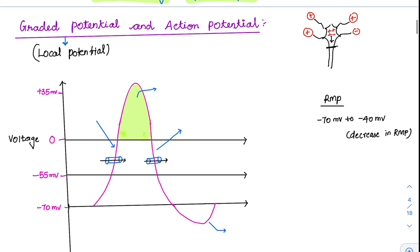Let's take an example. Suppose I need a minimum of 5 mV to produce an action potential (this is an arbitrary number). If 2 mV comes from one dendrite, 3 from another, but negative 2 from a third, the end potential is: positive 5 minus negative 2, giving just 2 mV. My requirement is 5 mV. So the graded potential tries to produce an action potential, but the threshold is not reached, and it will decay.